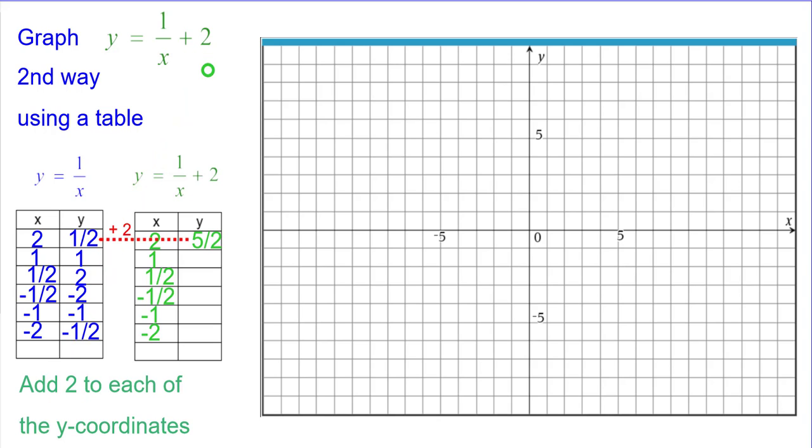So, I'm going to take that half and add 2. Think of 2 as 4 halves, 1 half plus 4 halves is 5 halves. So, I'll plot 2 comma 2 and a half, 1 plus 2 is 3, plot 1 comma 3. 2 plus 2 is 4, so plot 1 half comma 4.